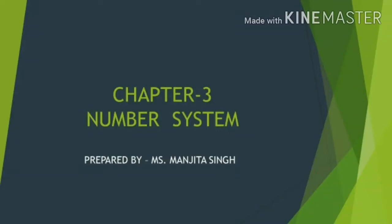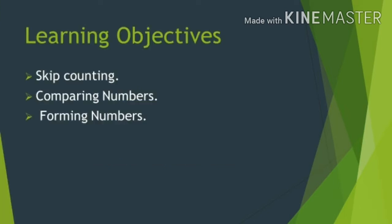Hello students, today I am going to explain the same chapter — Number System. Students in Class 4, you will learn about large numbers, that is six and seven digit numbers. Already in the previous class I have explained some of the important topics about these numbers, so today I will explain some more interesting things about large numbers. Today you will learn the last three topics of this chapter: skip counting, comparing large numbers, and how to form large numbers.